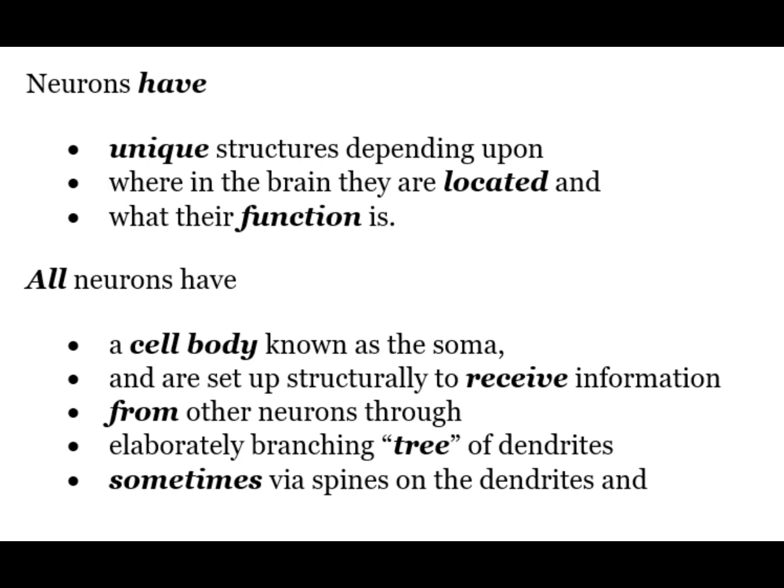Neurons have unique structures depending upon where in the brain they are located and what their function is. All neurons have a cell body known as the soma and are set up structurally to receive information from other neurons through an elaborate branching tree of dendrites and sometimes via spines on these dendrites.